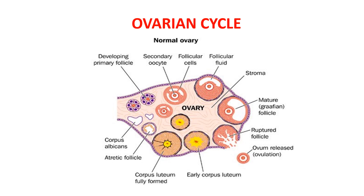There is growth of 6 to 12 primary follicles each month. The initial effect is rapid proliferation of the granulosa cells, giving rise to many more layers of these. In addition, spindle cells derived from the ovary interstitium collect in several layers outside the granulosa cells, giving rise to a second mass of cells called theca. This layer is divided into theca interna and theca externa. The mass of granulosa cells secretes a follicular fluid that contains a high concentration of estrogen. Accumulation of this fluid causes an antrum to appear within the mass of granulosa cells. Then, accelerated growth leads to the formation of larger follicles called vesicular follicles.